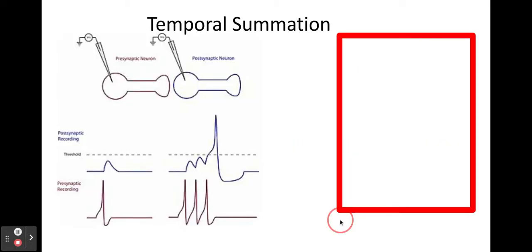So let's take a look at some of these roles. The first role is summation and there are two types of summation you need to know about. There's temporal summation and spatial summation. Temporal summation as you can see here is where I've got one presynaptic membrane feeding into one postsynaptic membrane.